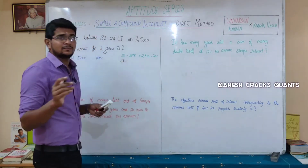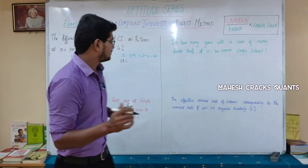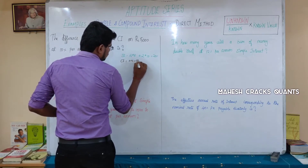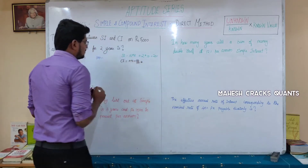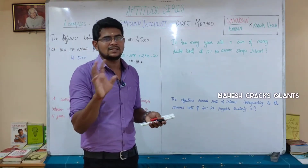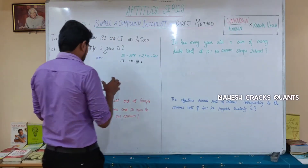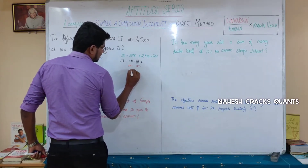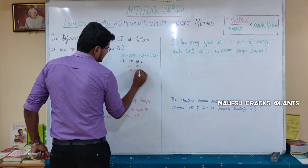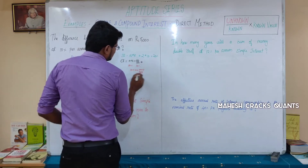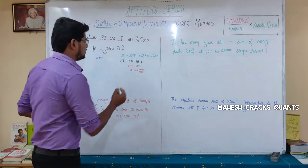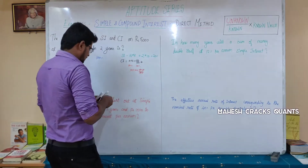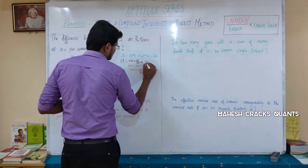Compound Interest is successive increase, so we use the formula A plus B plus AB divided by 100. For 2 years at 10%, that gives 10 plus 10 plus (10 into 10 divided by 100). The zeros cancel: 10 plus 10 plus 1 equals 21. So Compound Interest is 21%.